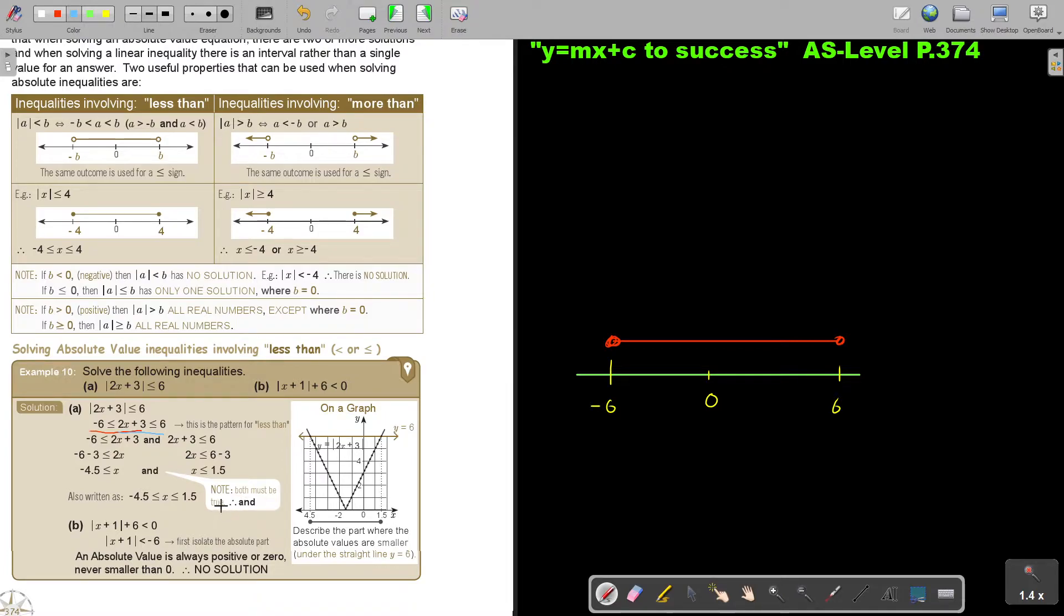Note, both must be true. So also in written, do you see the word and? Or you can include it like this. I just want to see, did I do both sketches? This sketch is actually for A. So this is the inequality, this is the 6. And what I'm asking you in this case, where is the absolute value smaller? So it's from there to there smaller, then the absolute value will become bigger. And that is the solution that I got.